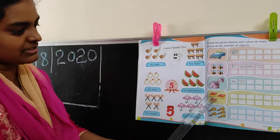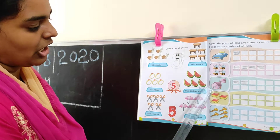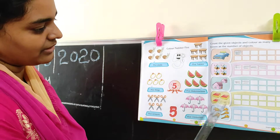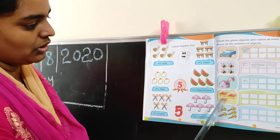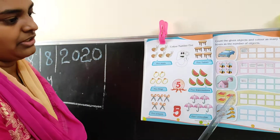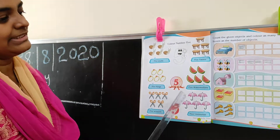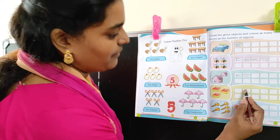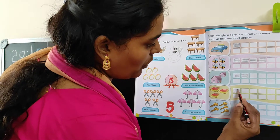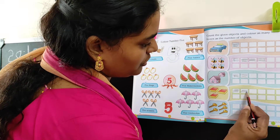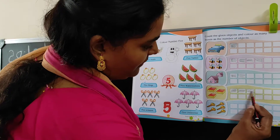What is this? Books. How many books are in the picture? One, two, three. You color how many boxes? Three. One, two, and three.